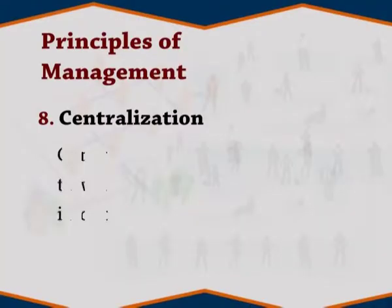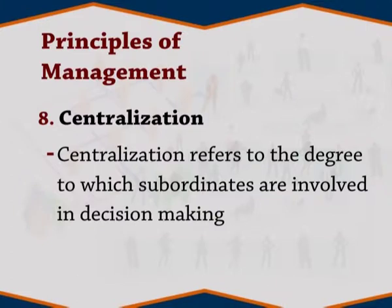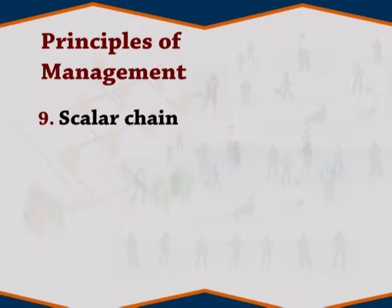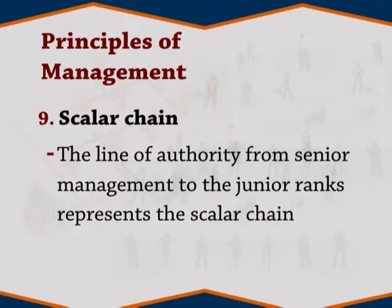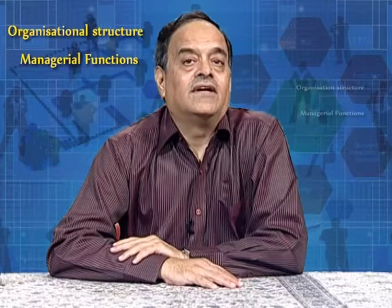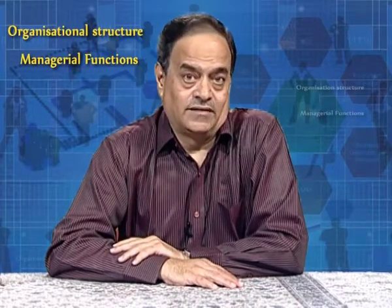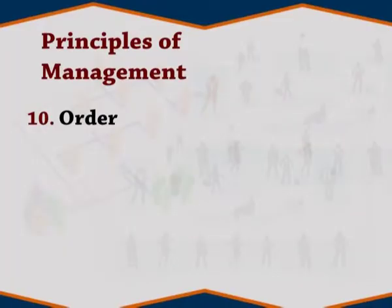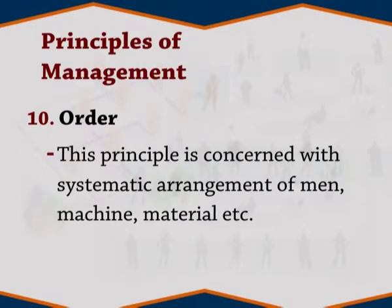Eight: centralization. Centralization refers to the degree to which subordinates are involved in decision making. Nine: scalar chain. The line of authority from senior management to junior rank represents the scalar chain. Communications should follow this chain. Reporting structure should be from junior to senior level. Ten: order. This principle is concerned with systematic arrangement of man, machine, material, etc. There should be a specific place for every employee in the organization.